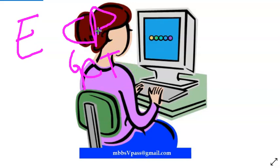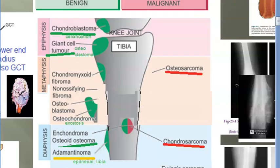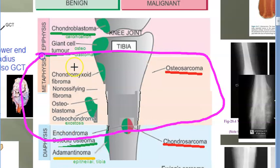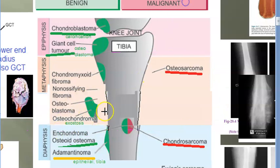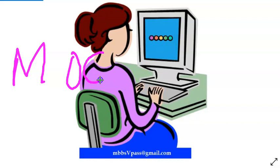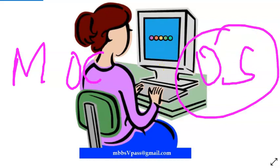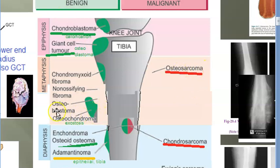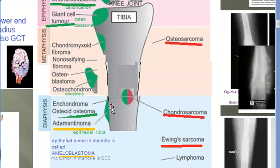For epiphysis we saw giant cell tumor (osteoclastoma) and chondroblastoma — nothing malignant to remember there. Now coming to metaphysis: here you should know osteochondroma, which is exostosis — you can see something coming out of the bone. And importantly, osteosarcoma is the malignant tumor of the metaphysis.